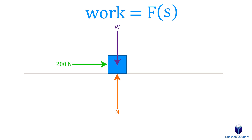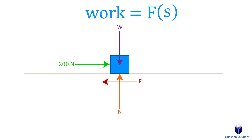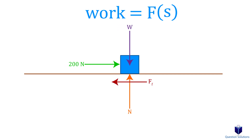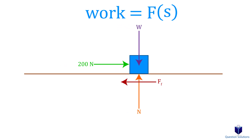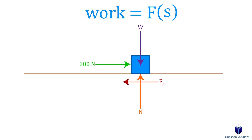Now let's say there is a frictional force. Friction tries to keep the box from moving to the right, so we say it does negative work. So the 200 newton force does positive work, while friction does negative work.